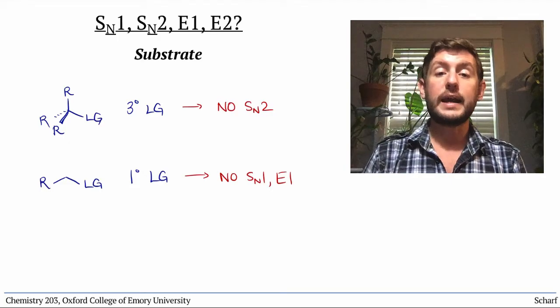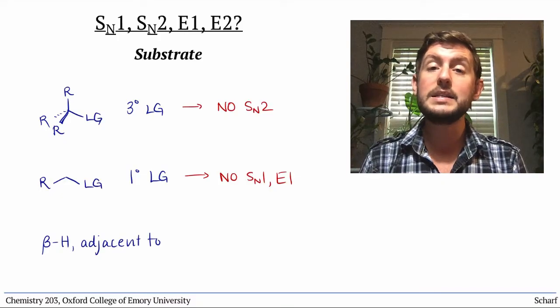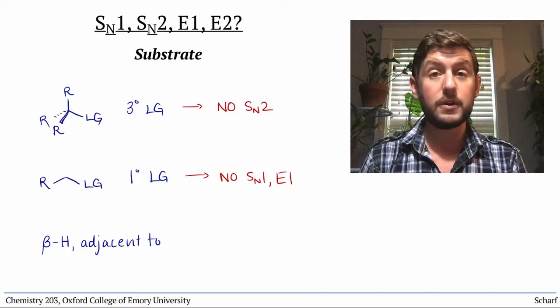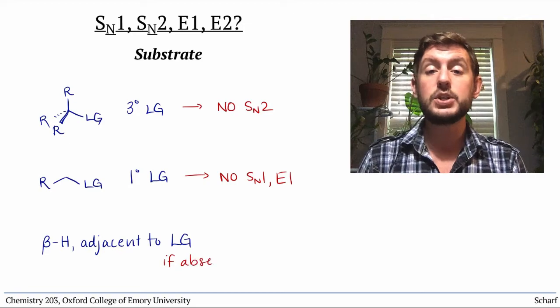And E2 reactions depend on the presence of an adjacent hydrogen with an anti-periplanar orientation relative to the leaving group. If that's not possible, E2 elimination can't occur.